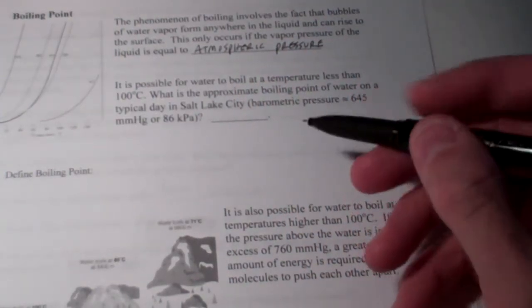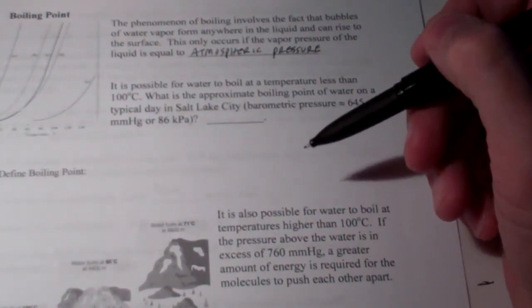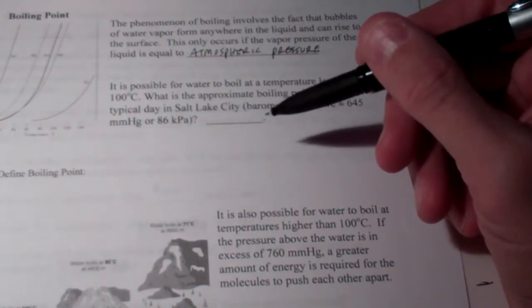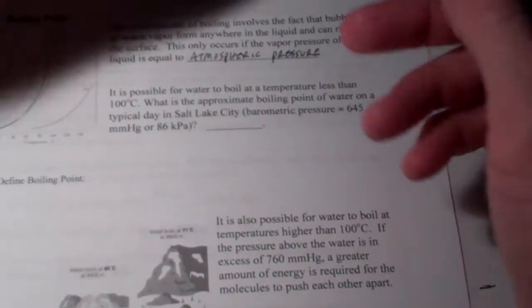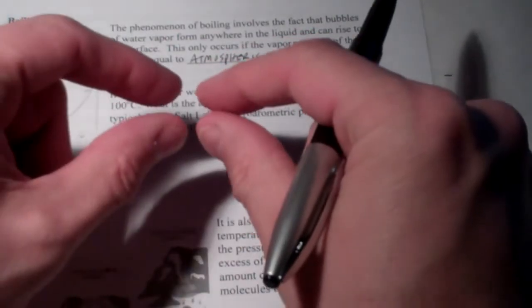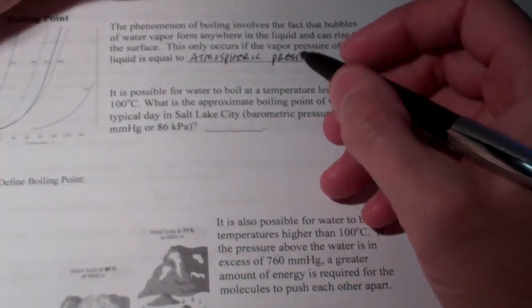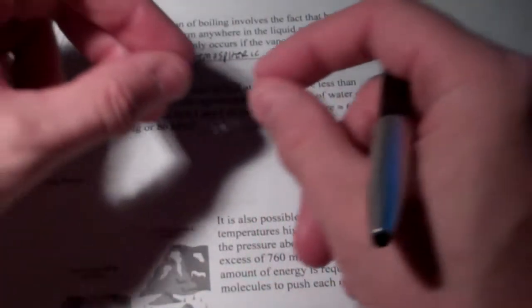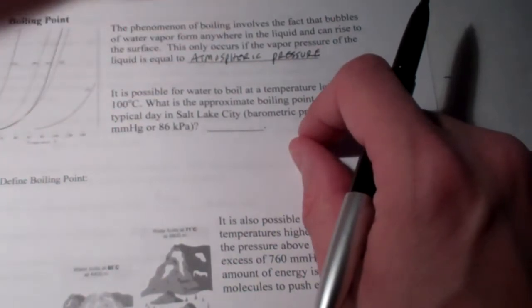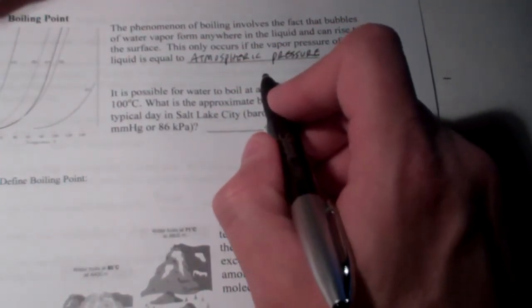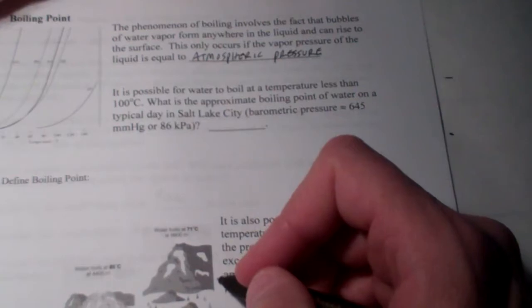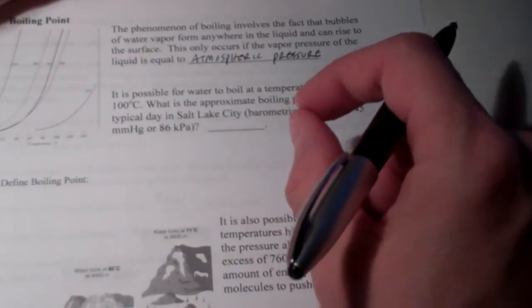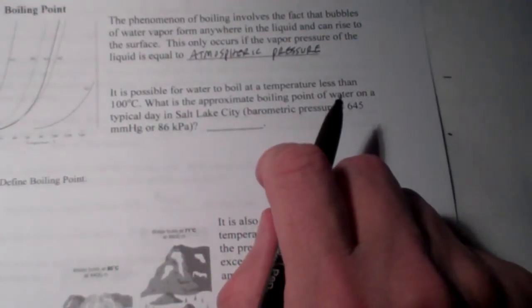If you think about a beaker full of water, in order for water to boil, bubbles need to form. That liquid needs to have enough energy, the liquid particles, to pull away from each other, to expand and to form a gas. If the atmosphere is pushing down on that liquid with a lot of pressure, it makes it more difficult for those bubbles to form. As the atmospheric pressure lowers, it becomes easier for that liquid to boil. Or, if the atmospheric pressure increases, it's harder for that bubble to form, and so it will actually raise the boiling point.